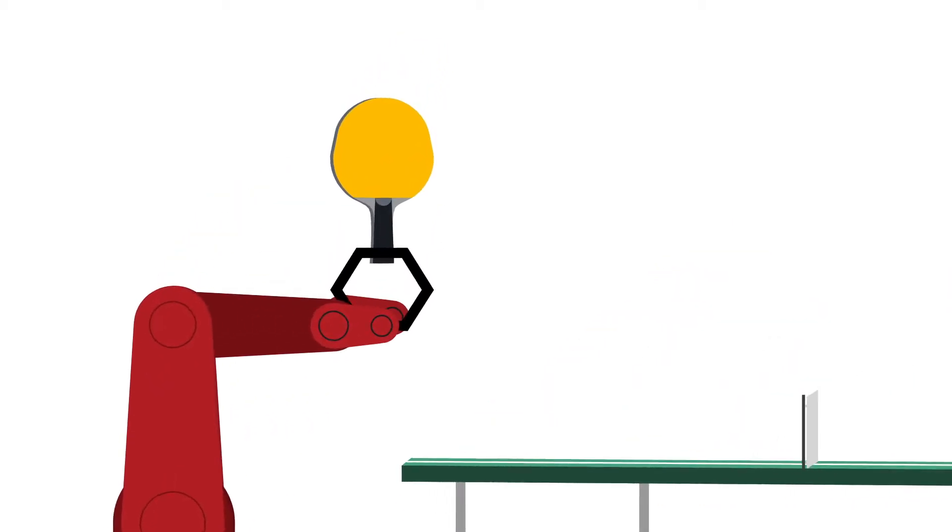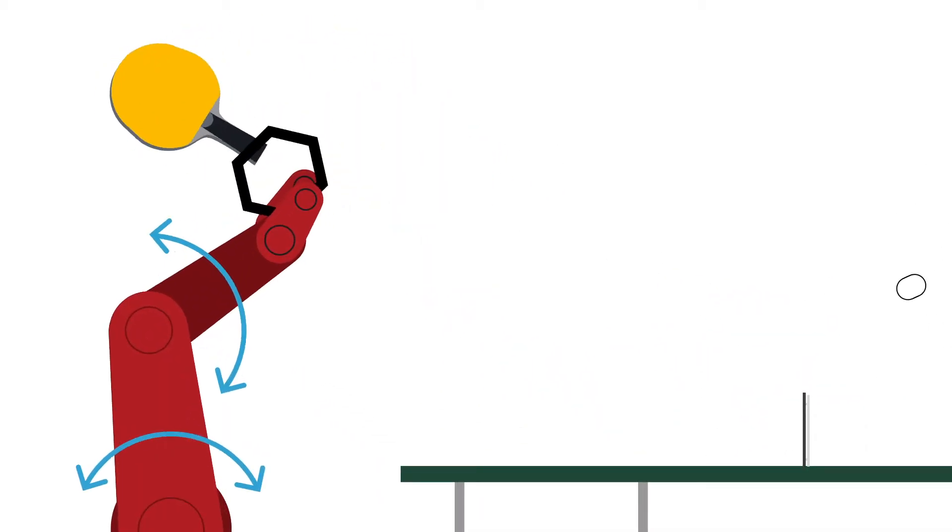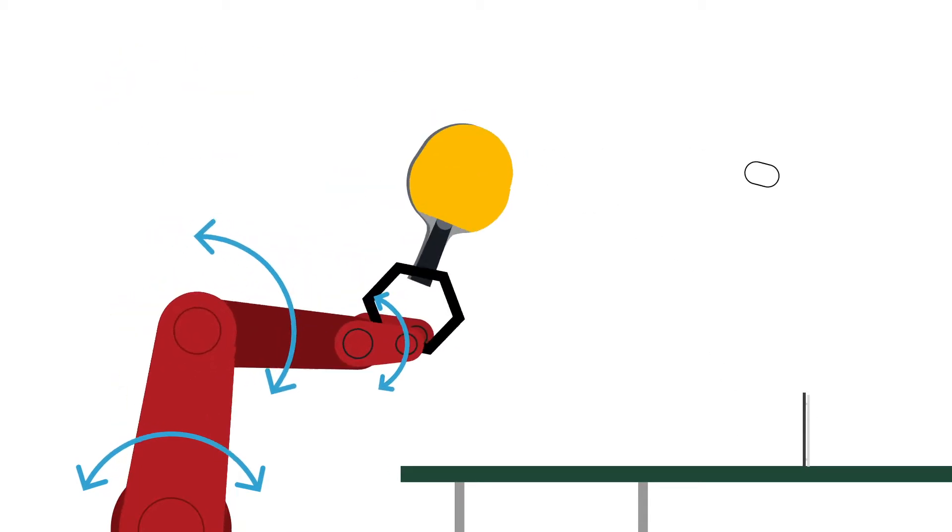The robot's task is to hit the ball, and the motion plan is how the robot moves to hit the ball within the limits of its joints and environment.